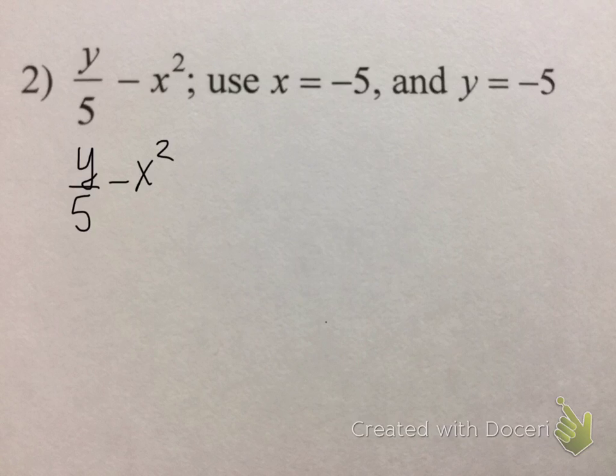For our second example, we have y divided by 5 minus x squared. We're going to do the same thing again. When our x is negative 5, we're going to plug it in for the x. Make sure you don't drop that minus sign in there. Next, I'm going to take our y equals negative 5 and plug that in as well.